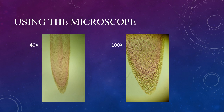Here we see two images of the field of view at different total magnifications. Total magnification is simply the magnification of the objective lens multiplied by the magnification of the ocular lens. Ocular lenses in our labs are 10x.